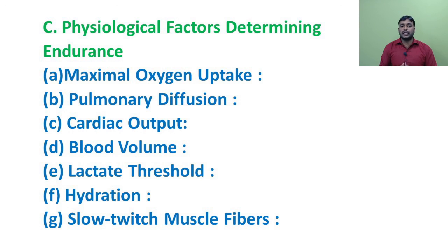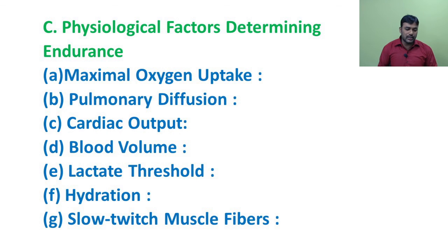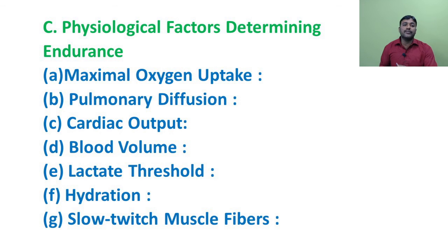Next factor: hydration. Endurance activities often result in exercise sweating, which causes substantial fluid loss and impaired endurance performance. Dehydration leads to a decrease in endurance. Hydrating athletes is very important, especially for marathon runners. The last factor is slow-twitch muscle fibers: more slow-twitch muscle fibers yield better energy to exercising muscles during endurance activity.